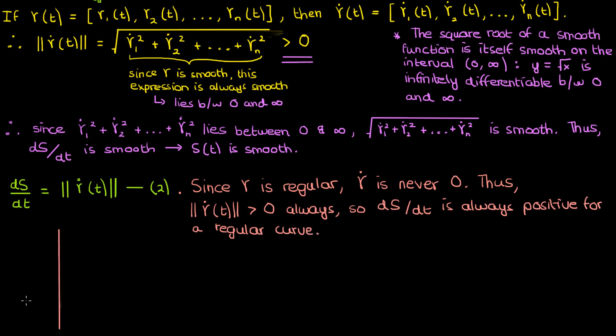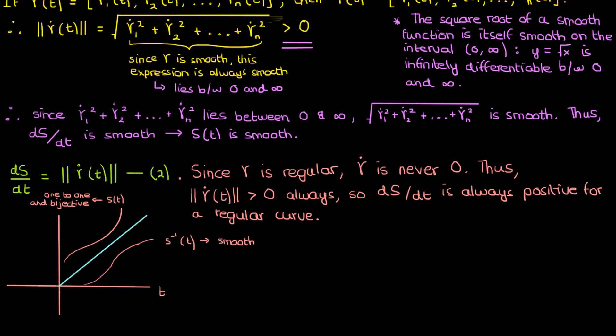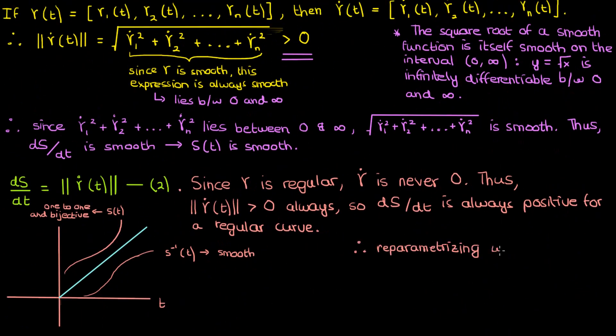So by equation 2, this would then mean that ds/dt is also always positive. So if I draw on the graph the arc length s as a function of the original parameter t, it will always be increasing. We can see that s(t) has a unique value of s for every value of t, and a unique value of t for every value of s. It is therefore bijective. Now the inverse function s^(-1), which is basically just t as a function of s, can be obtained by reflecting s(t) about the 45 degree straight line. You can see that this inverse is also smooth since the original function s(t) was smooth. Therefore this second condition is also satisfied, making reparametrizing with respect to arc length a valid option.